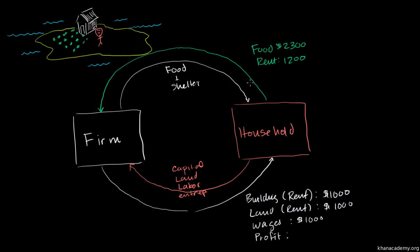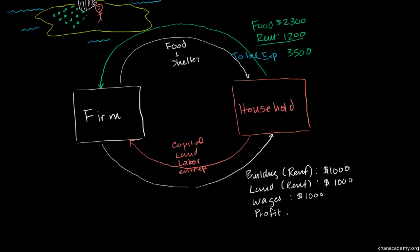A couple of ways to think about it. From the household's point of view, what are his total expenditures? They come out to $3,500. And what's his total income? Well, he gets $1,000 for the building, $1,000 for land, $1,000 for wages, and some profit from the firm. We don't know that profit yet, so let's hold off on total income and look at the firm's perspective.